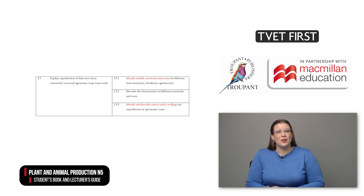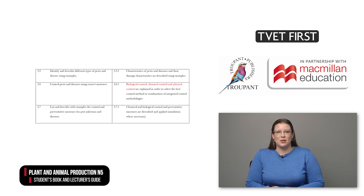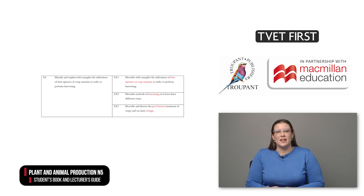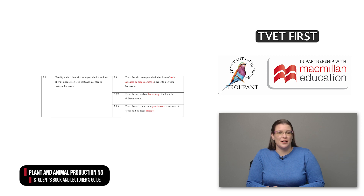Students learn how to identify suitable rootstocks, scions, seeds, and seedlings for reproduction. Module 2 also looks at pest control and preventive measures including biological, chemical, and physical control. This is followed by learning content on fruit maturity, harvesting, post-harvest treatment, and the storage of crops. Module 2 closes with crop rotation, mulching, and an introduction to hydroponics.